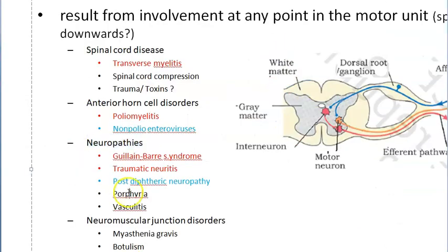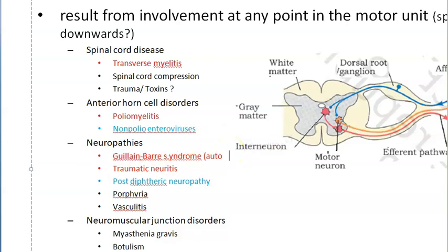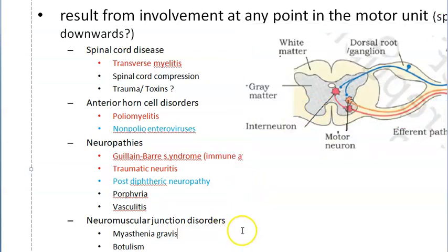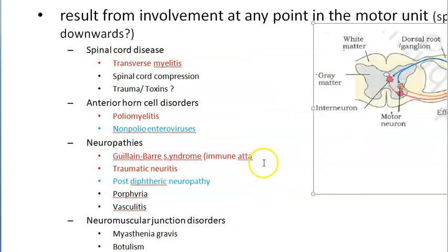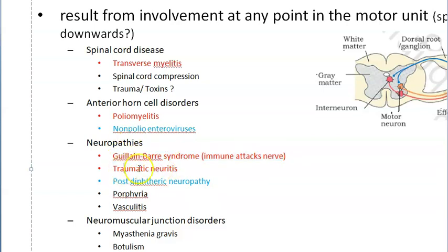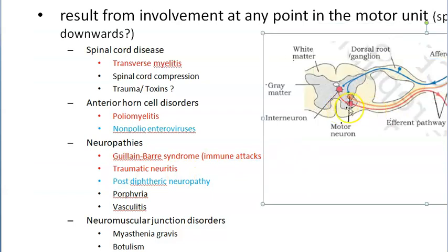This nerve can get affected by Guillain-Barré syndrome. Guillain-Barré syndrome is an autoimmune condition that affects the nerves — the immune system attacks the nerve. This is a very important differential for flaccid paralysis in the context of polio. Guillain-Barré syndrome — remember the spelling: G-U-I-L-L-A-I-N B-A-R-R-É syndrome — is a critical diagnosis to consider.